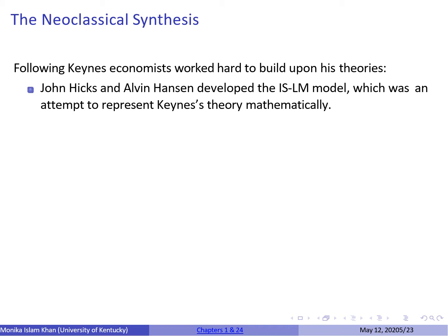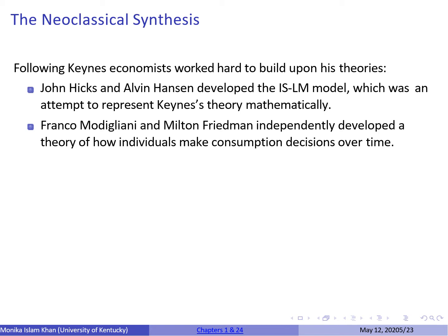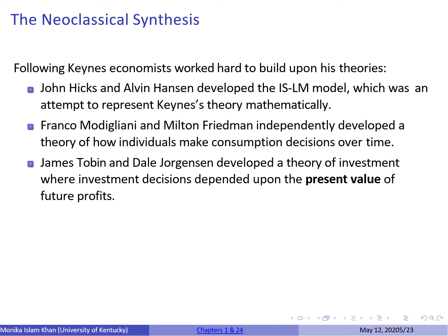Keynes never used any mathematical models in his book, so following the publication of the General Theory, many economists tried to represent his theories mathematically — like the IS-LM model developed by John Hicks and Alvin Hansen. This line of macroeconomic thought was known as the neoclassical synthesis. Within this synthesis, Franco Modigliani and Milton Friedman developed theories on individual consumption decisions over time, showing that individuals are forward-looking and that income today is not only consumed today but also saved and spread out over time. James Tobin developed a theory of investment, explaining that investors look not only at future profits but also at what those future profits are worth today.